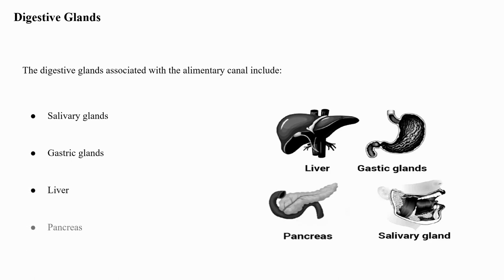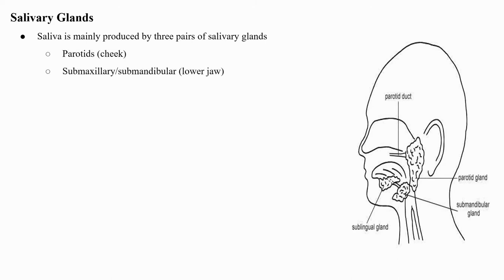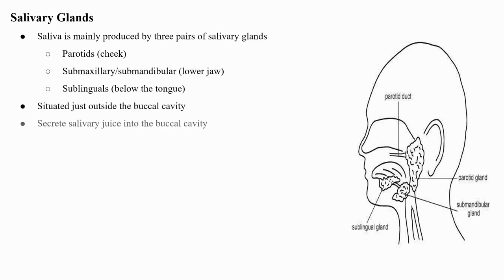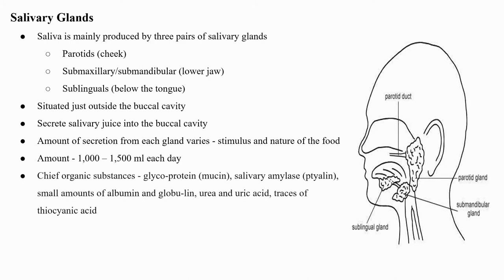The digestive glands associated with the alimentary canal include salivary glands, gastric glands, liver, and pancreas. Saliva is mainly produced by three pairs of salivary glands: the parotids (cheek), the submaxillary or submandibular (lower jaw), and the sublinguals (below the tongue). These glands secrete salivary juice into the buccal cavity at about 1,000 to 1,500 ml each day. The chief organic substances are glycoprotein mucin, salivary amylase (ptyalin), small amounts of albumin and globulin, urea, uric acid, and traces of thiocyanic acid.